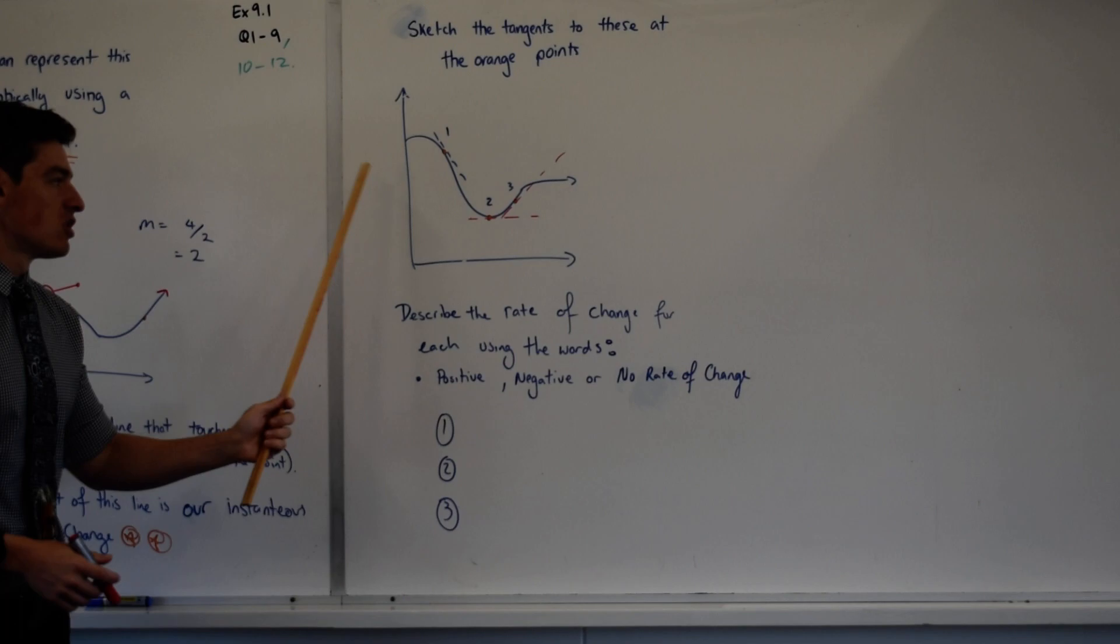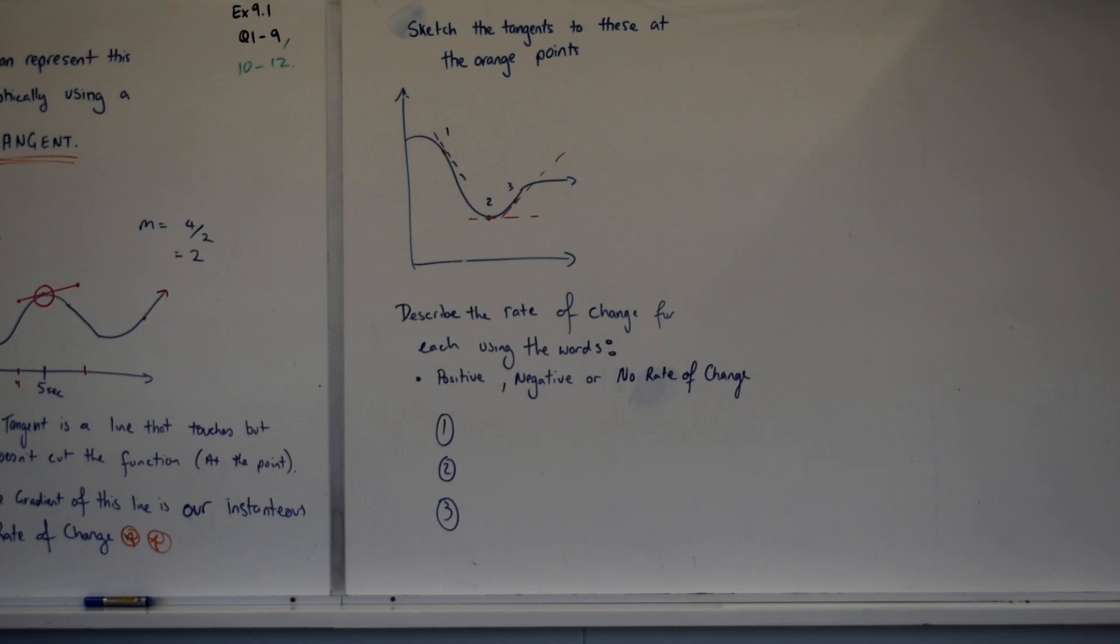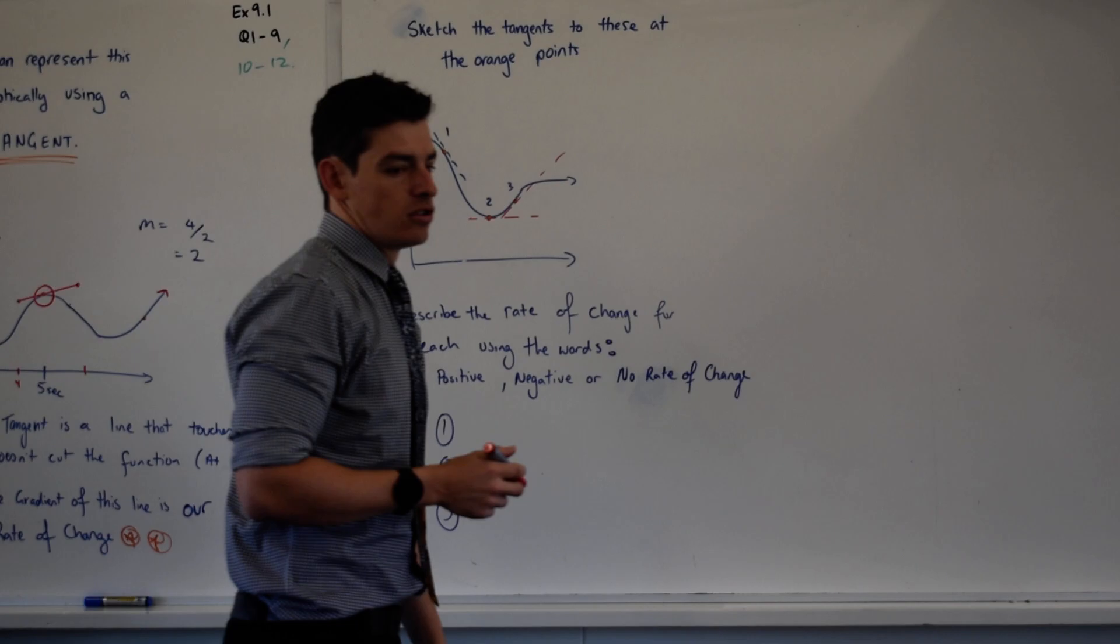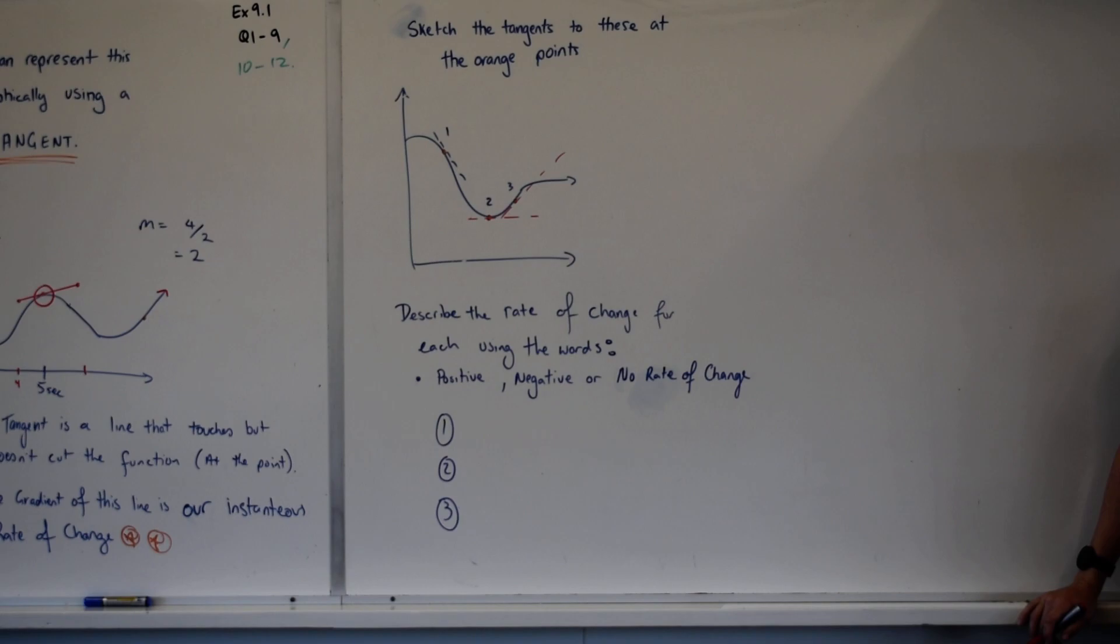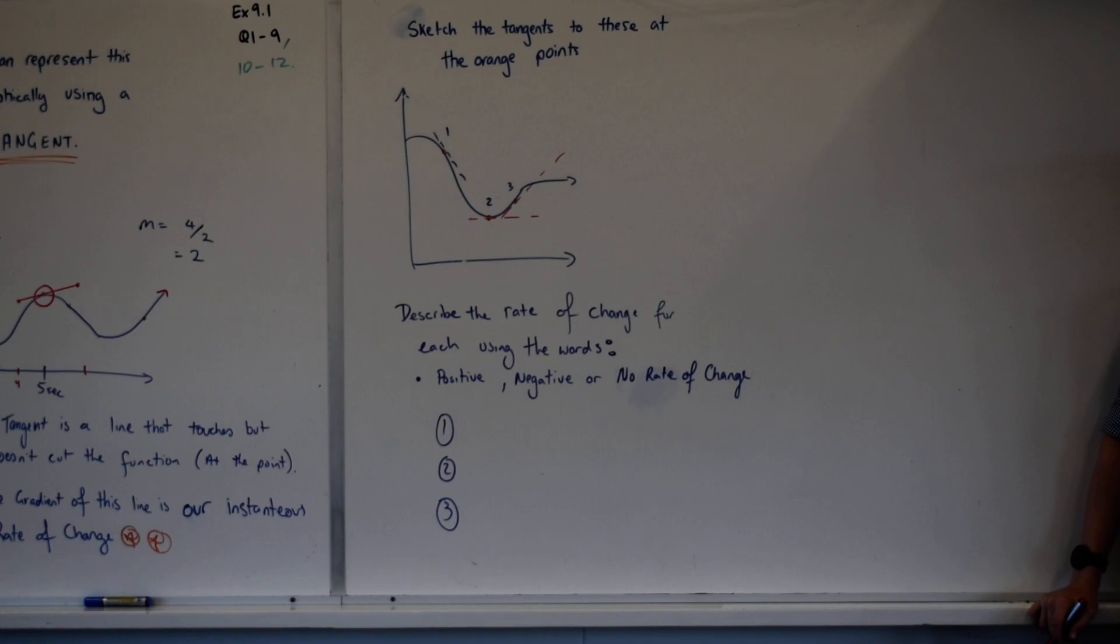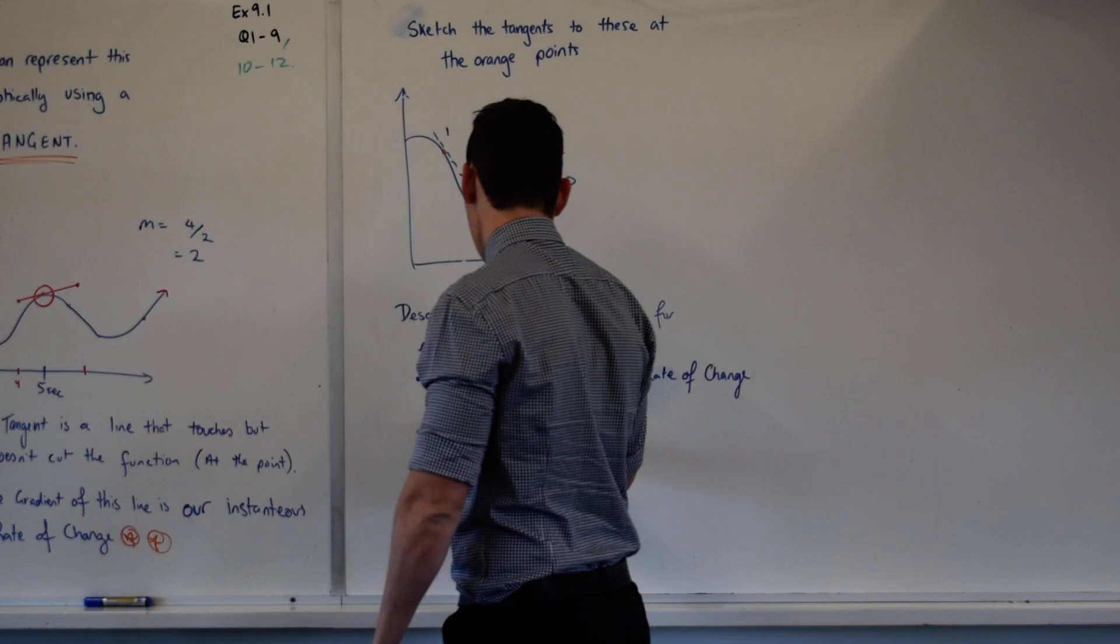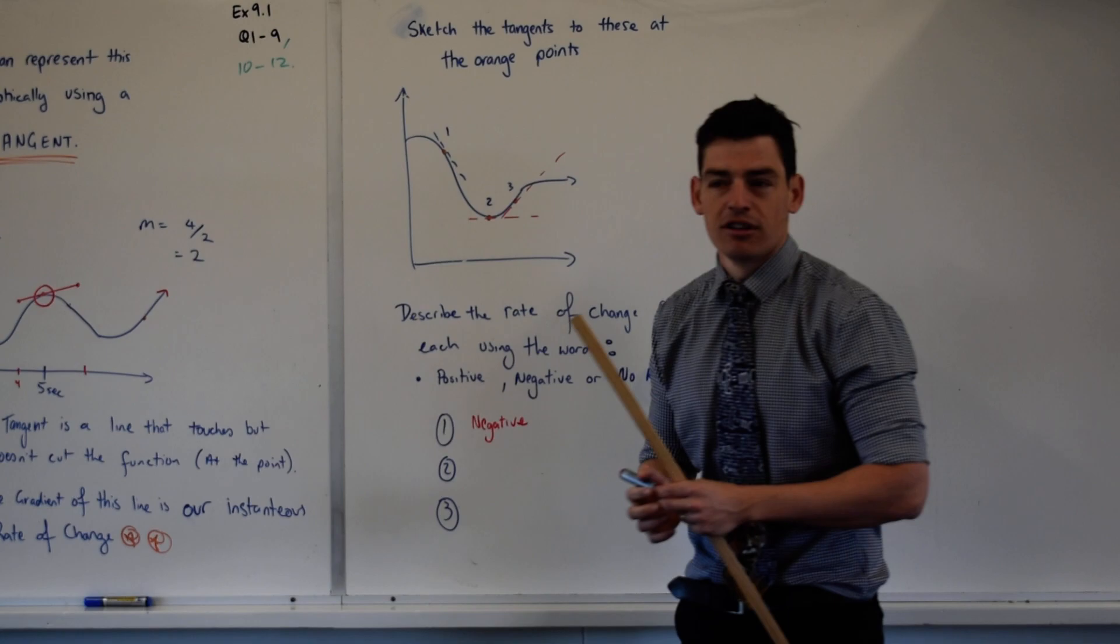So now, I want you to describe each of these rates of change at the points using positive, negative or no change. So for one, who thinks one is positive? Who thinks one is negative? Who thinks one is no change? So we have three half-hands go up at negative, so I'm going to assume that we want negative here. It would be nice if we put our hands up at some point.